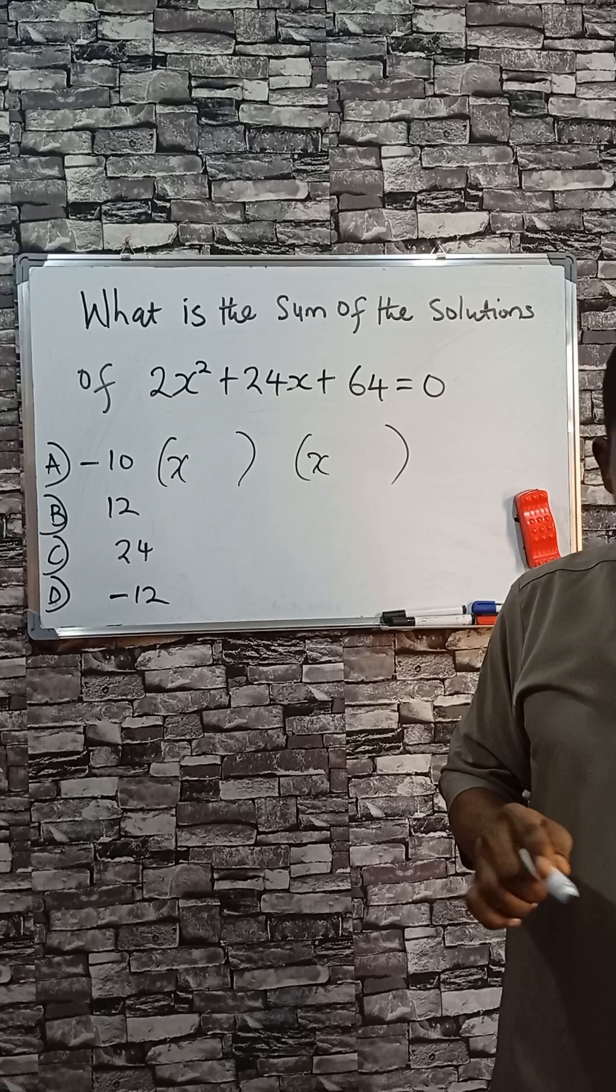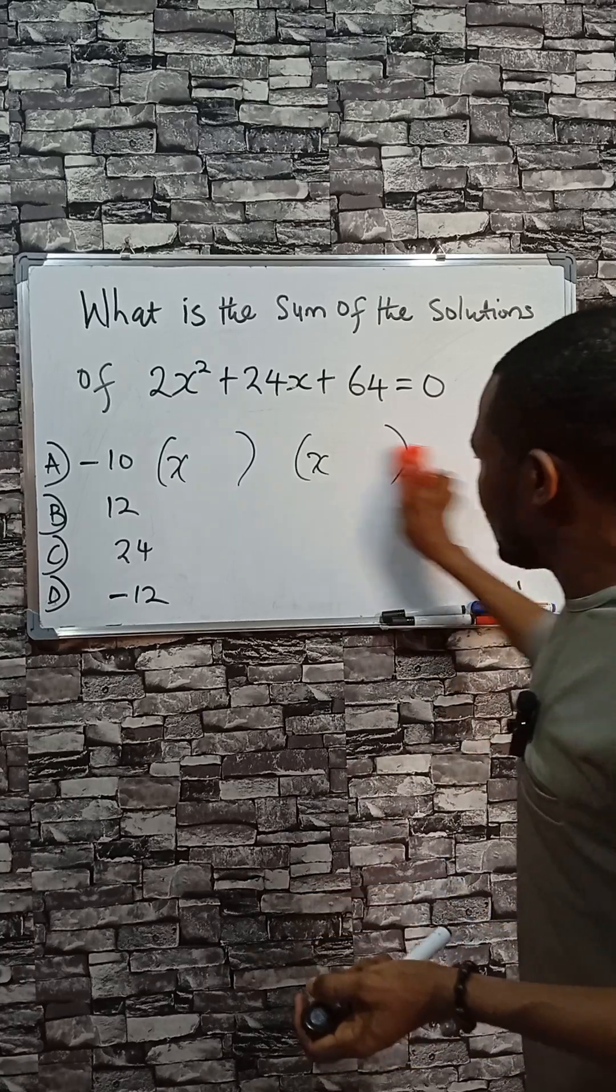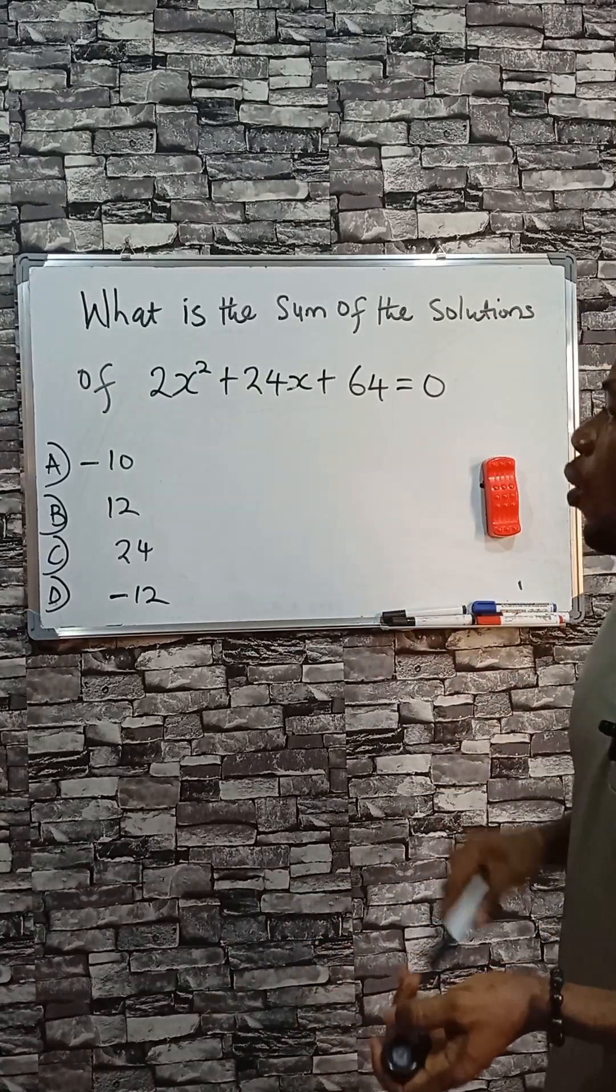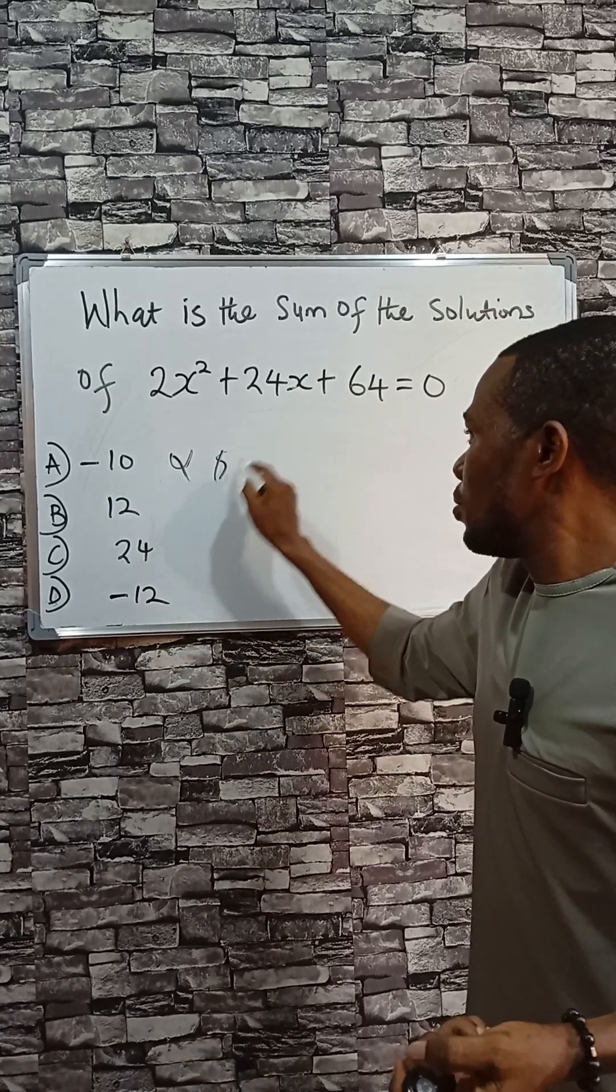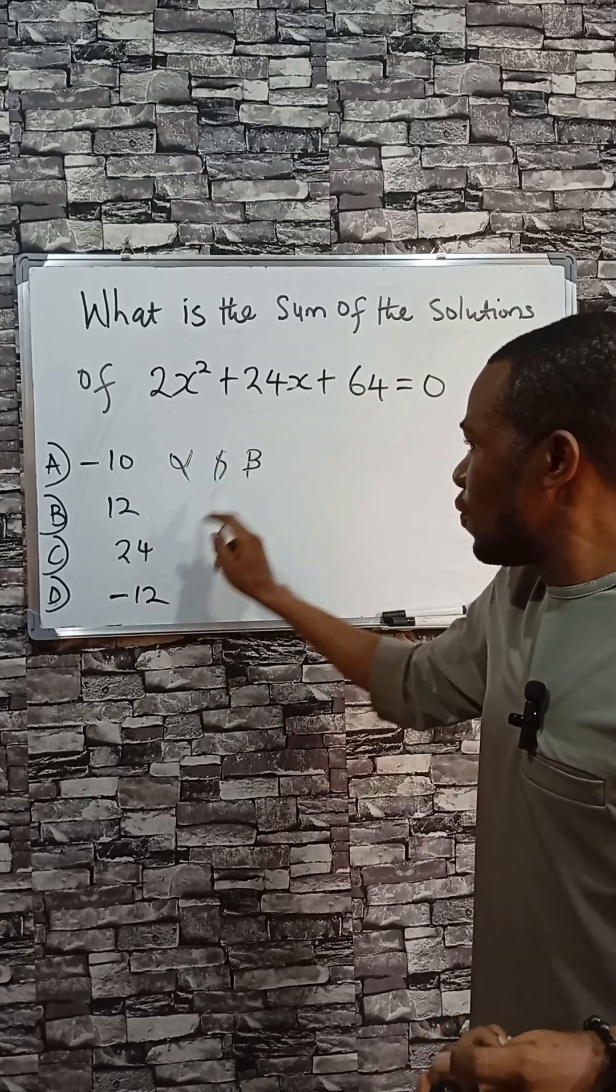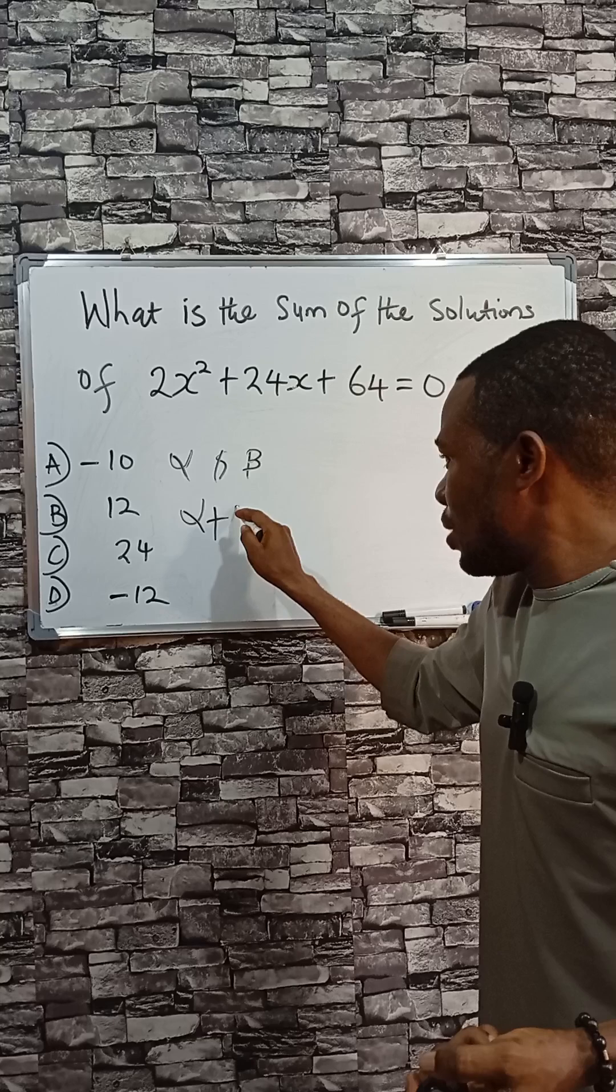Why don't you do this instead? Now let one of the roots be alpha and the other one beta. So you add the two of them, that is alpha plus beta being the sum of both.